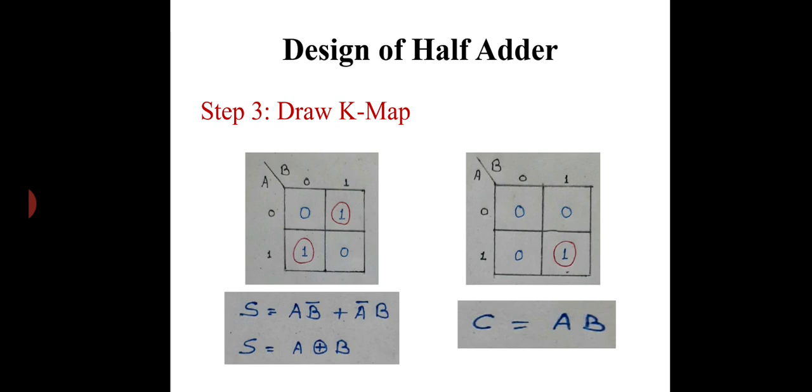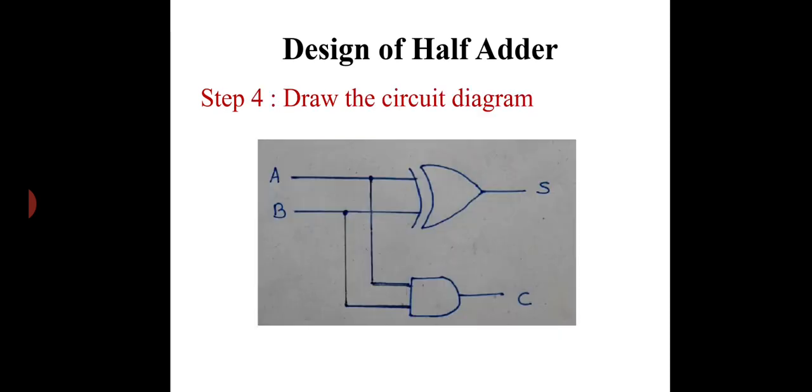That is nothing but the XOR gate as we all know. Therefore, sum is nothing but A XOR B. In the same line, I can write the carry equation as A into B.